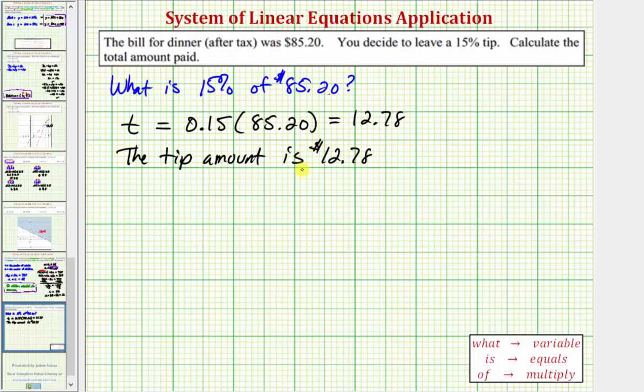And now that we know the tip amount, we can find the total amount paid. The total amount paid is going to be the bill amount of 85 dollars and 20 cents,